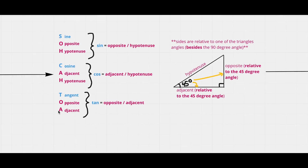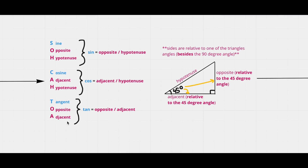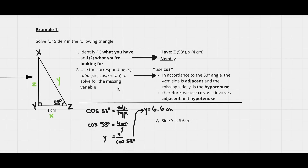Which trig ratio involves both adjacent and hypotenuse? Looking back at SOHCAHTOA, cosine involves both — cosine is adjacent divided by hypotenuse. So we write: cos(53°) = adjacent / hypotenuse = 4 / y. Rearranging by swapping cos(53°) and y gives us: y = 4 / cos(53°).